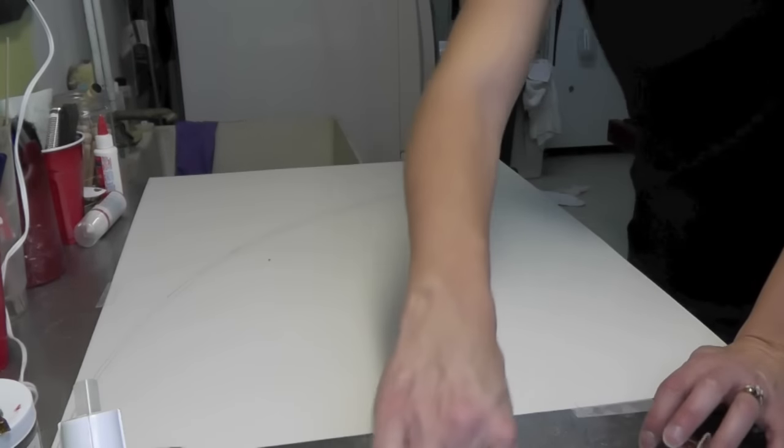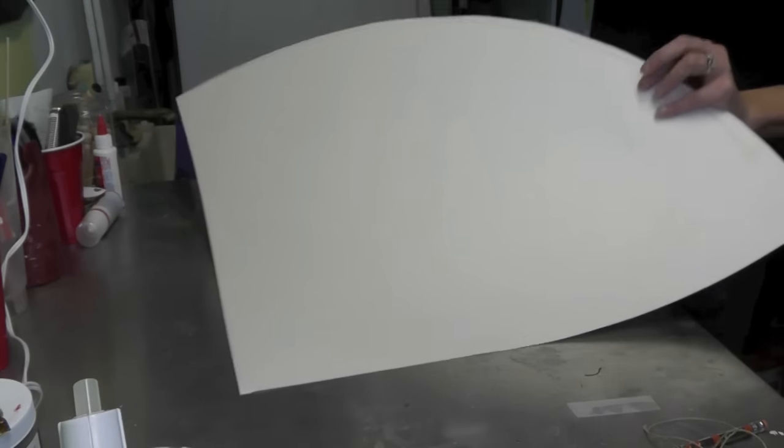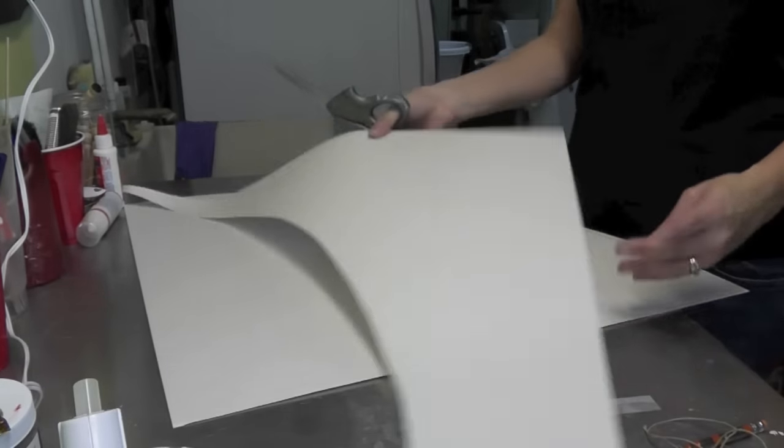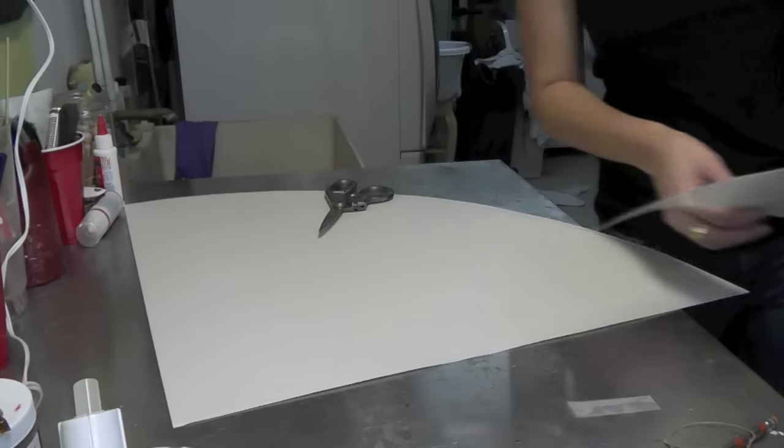But all you're going to do then is cut it out. Now we have a really big piece to make a cone and we still have some scrap pieces where you can make a bunch of little cones as well.